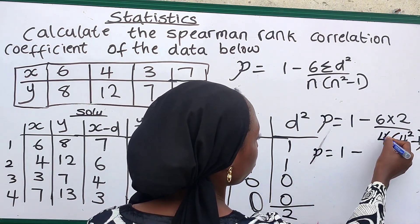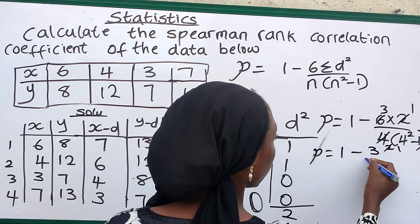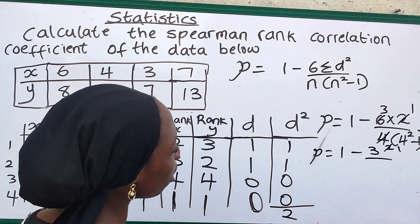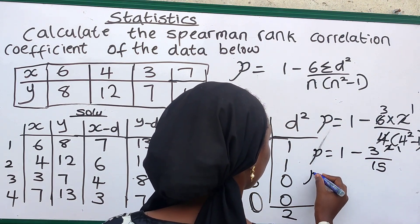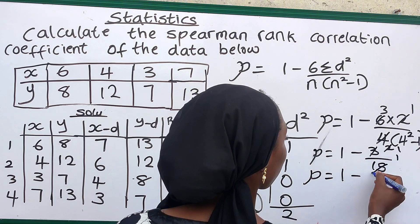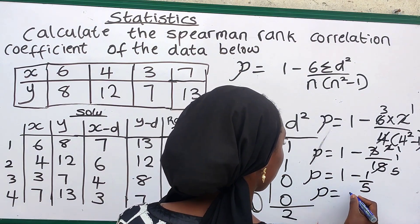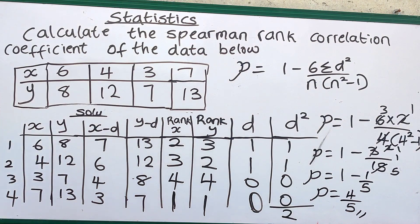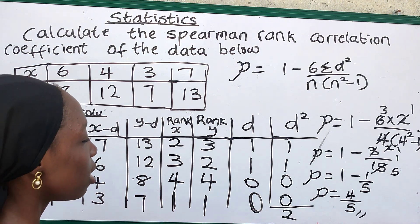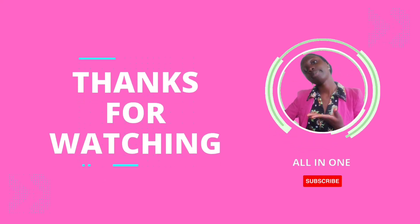So we have 1 minus 12 over — 4 squared is 16, 16 minus 1 is 15, and 4 times 15 is 60 — giving us 1 minus 12 over 60, which simplifies to 1 minus 1 over 5. Our answer is therefore 4 over 5. So the Spearman rank correlation coefficient of this data is 4/5, or 0.8.